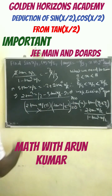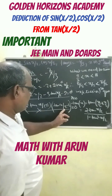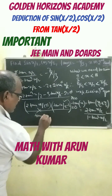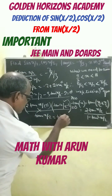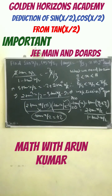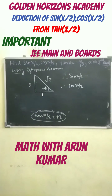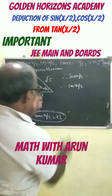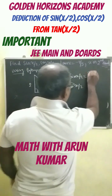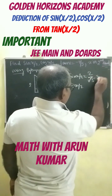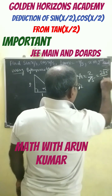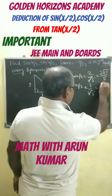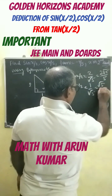Since x/2 lies in the first quadrant, the negative root cannot apply, so we take tan(x/2) equals positive 2. Using this to draw a right triangle with a 90-degree angle, we get sin(x/2) equals 2 by root 5, or equivalently 2root5 by 5, and cos(x/2) equals 1 by root 5, or equivalently root5 by 5.